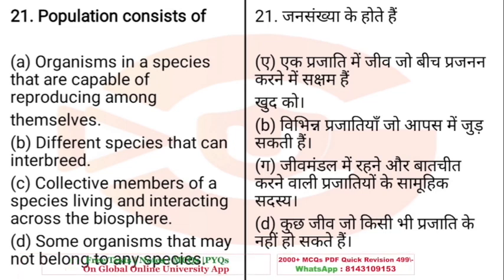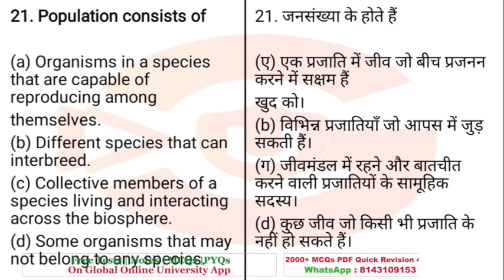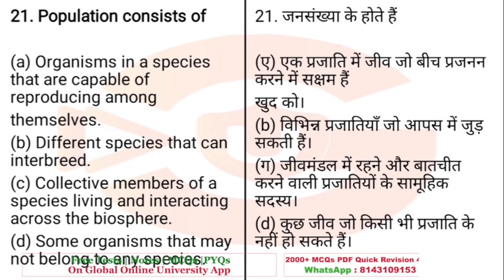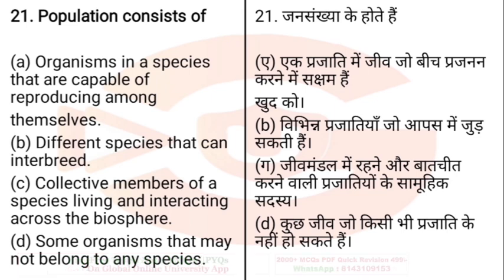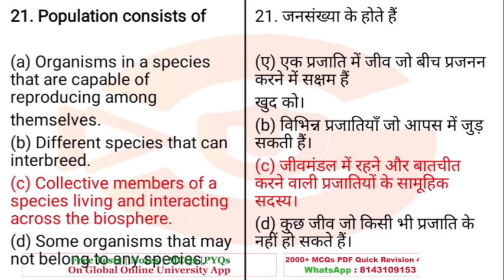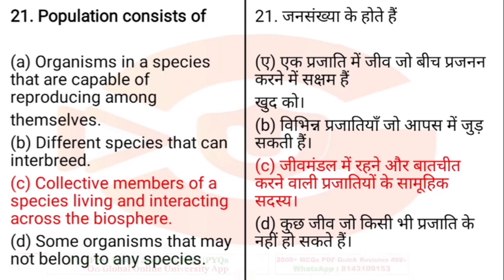Question: Population consists of — A. Organisms in a species that are capable of reproducing among themselves, B. Different species that can interbreed, C. Collective members of a species living and interacting across the biosphere, D. Some organisms that may not belong to any species. The right answer is C — collective members of a species living and interacting across the biosphere.